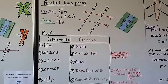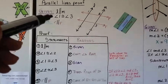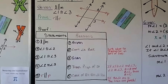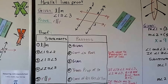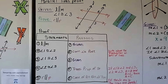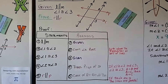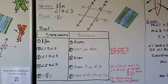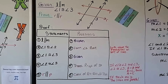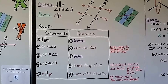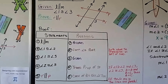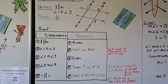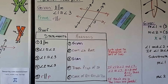Statement 3 is angle 1 is congruent to angle 3, which is given. Statement 4 is angle 2 is congruent to angle 3 by the transitive property of congruence — if angle 1 is congruent to both angle 2 and angle 3, then angle 2 is congruent to angle 3. The transitive property says if a = b and b = c, then a = c. Statement 5 is r is parallel to p by the converse of the alternate exterior angles theorem — if the angles are congruent, the lines are parallel.